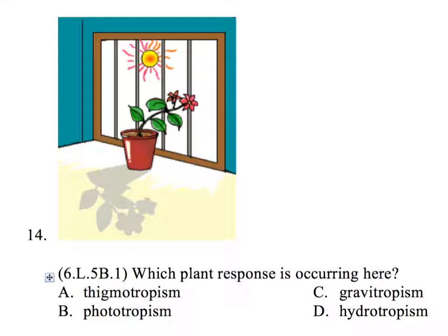Question 14. Which plant response is occurring here? A. Thigmotropism. B. Phototropism. C. Gravitropism. D. Hydrotropism.